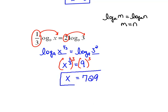So 729 is our possible answer. If I plug this back in place of x, I'm taking the log of 729. That's okay because that's a positive number, and that's what's important — we have to make sure that we're taking the log of a positive number.